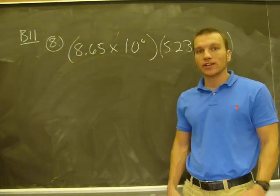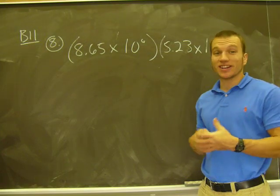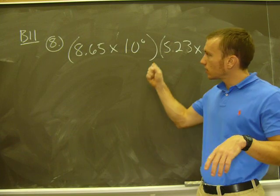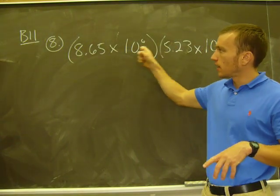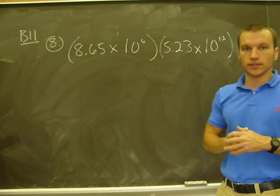Okay, B11 problem number 8. Directions are to perform the indicated operation and then write the answer in scientific notation. So here the operation is to multiply this number in scientific notation times this number in scientific notation.